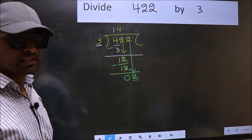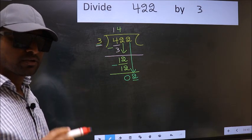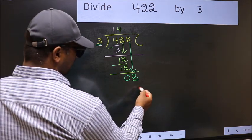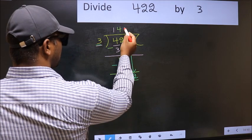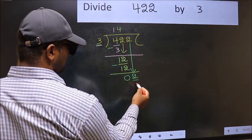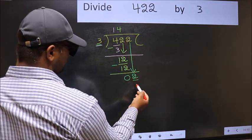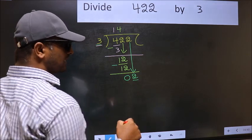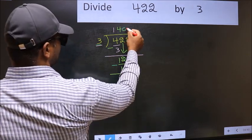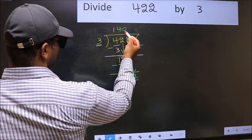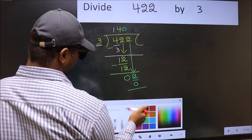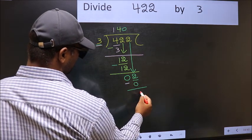But 3 is larger than 2. So what we should do is we should take 0. So 3 into 0, 0. Now you subtract. 2 minus 0, 2.